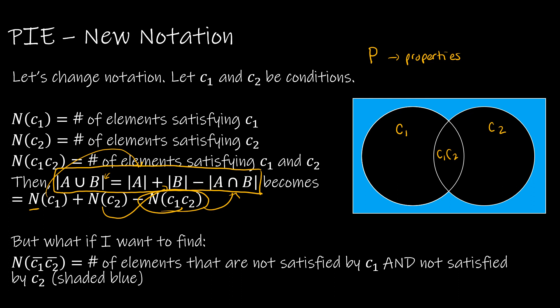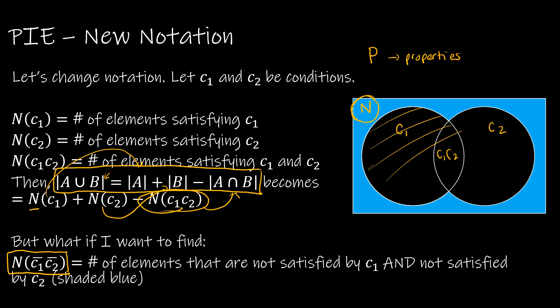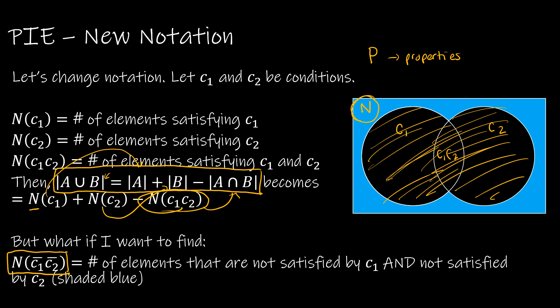What we're going to look at in this video and the next two is how we can leverage this situation. We want to find the number of elements that are not satisfied by C1 and not satisfied by C2. The square represents the universe of all potential elements; C1 and C2 are circles inside it, with an intersection. We're going to find the total number and then subtract everything inside the circles — our previous work focused on finding what's inside, and now we subtract that from the total.